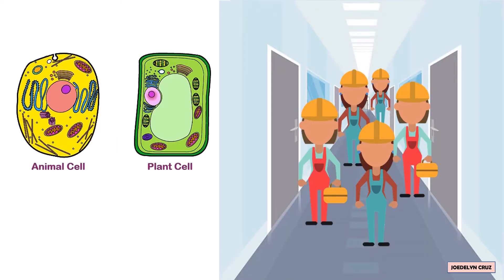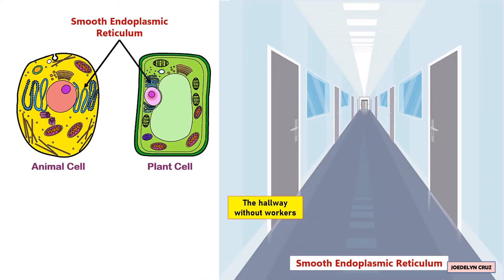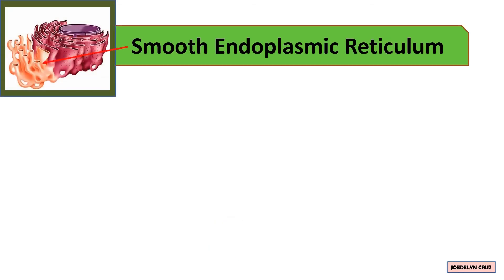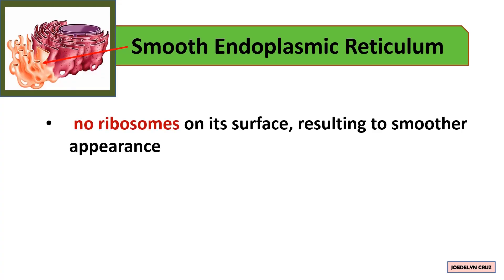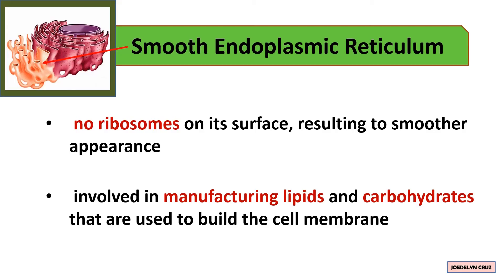On the other hand, the hallway without workers represents the smooth endoplasmic reticulum. Smooth ER has no attached ribosomes on its surface, resulting in a smoother appearance. It is involved in manufacturing lipids and carbohydrates that are used to build the cell membrane.